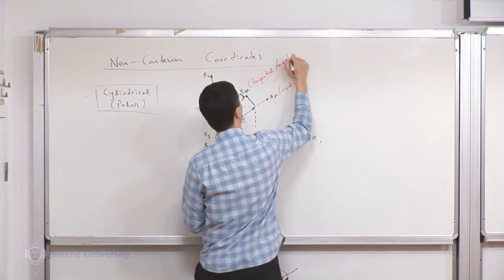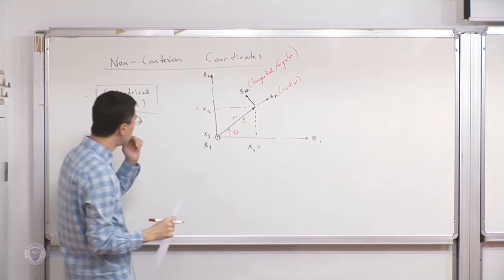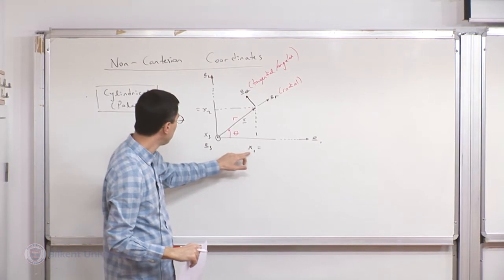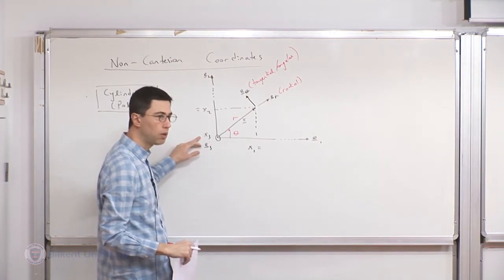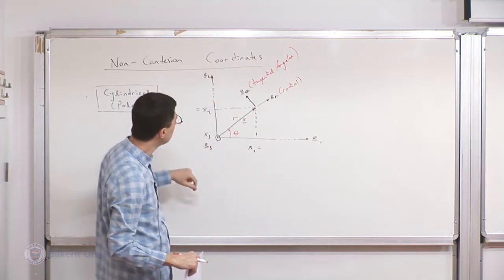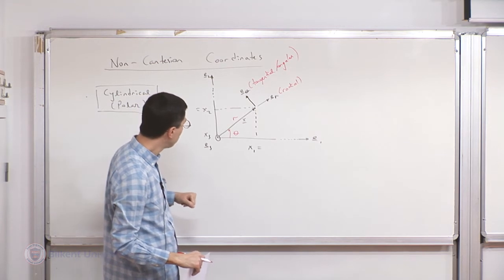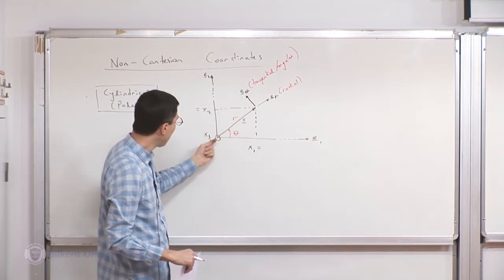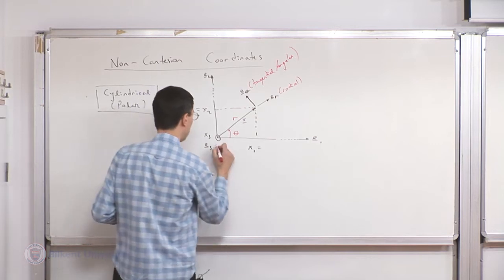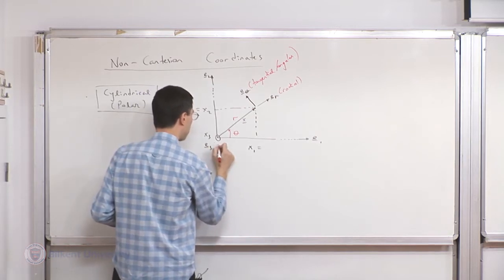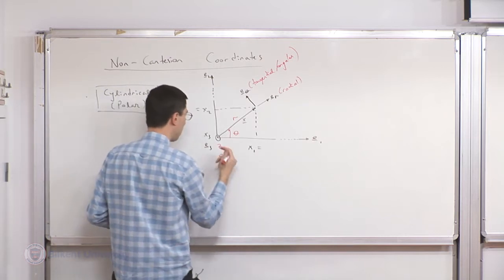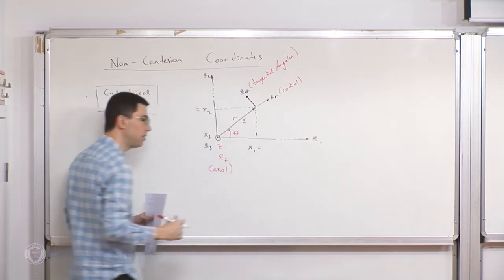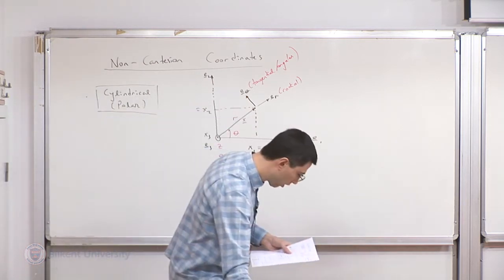So that's radial and that's tangential — or sometimes I will say simply angular. If I look at the Cartesian system the common coordinates are x1, x2, x3. For the cylindrical coordinate system the common coordinates are r (the distance), theta (the angle), and instead of x3 it's more common to use z. So z will be the axial direction with basis vector ez. That's just a more conventional choice.